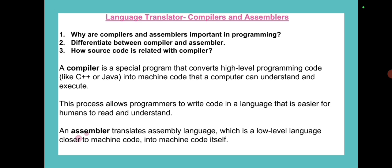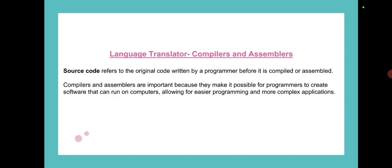Compiler and assembler are basically language translators. A compiler is used to convert high level language to low level language. This process allows programmers to write code in a language that is easier for humans to read and understand. An assembler translates assembly language, which is basically a low level language closer to machine code, into machine code itself.